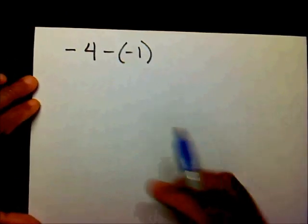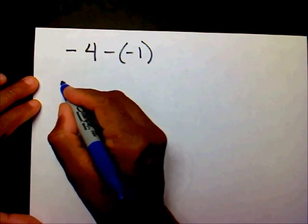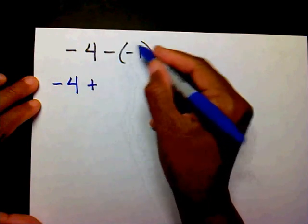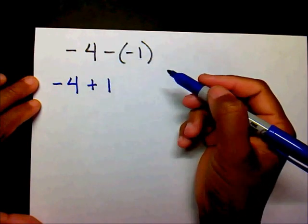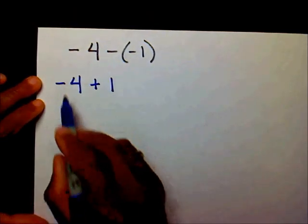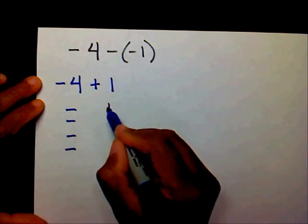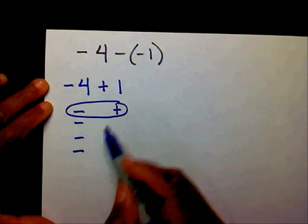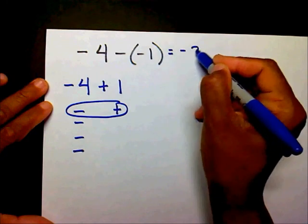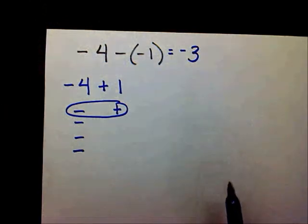The next problem we have is negative 4 minus negative 1. So I have negative 4. I want to add the opposite. Opposite of negative 1 is positive 1. I'm going to go through the same process I did with my adding integers. So I have four negatives, and I want to add one positive. That creates one zero pair. So therefore, the answer is negative 3. So negative 4 minus negative 1 equals negative 3.